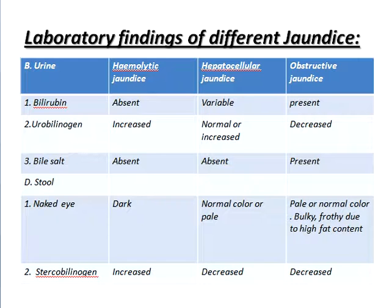Now the findings in stools — naked eye examination. Stools are dark in hemolytic jaundice. Normal colour or pale in hepatocellular jaundice. Stools are pale or normal colour in obstructive jaundice; bulky and frothy due to high fat content. Stercobilin is increased in hemolytic jaundice and decreased in obstructive jaundice.